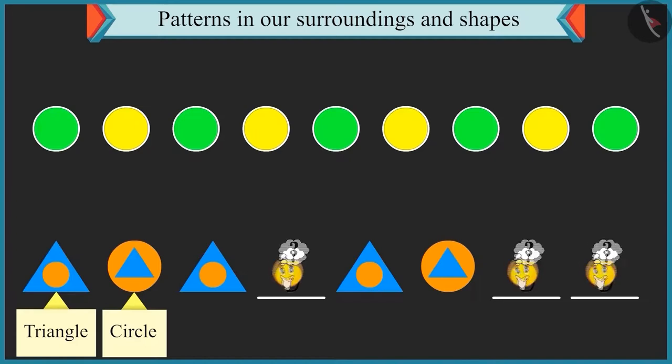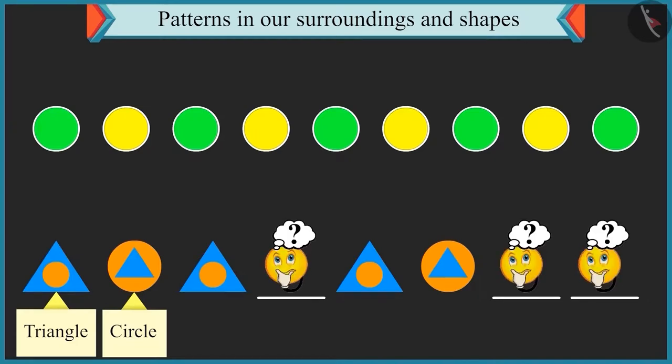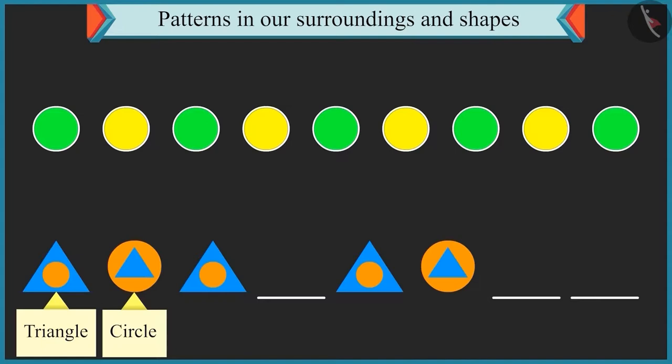Now tell me, which shapes would come at the empty places? Hmm. So now a small triangle inside a circle would come here in the empty place. Yes. Well done. Come on. Now try building this pattern.